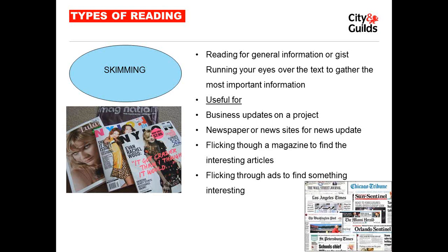The second type is skimming — reading for general information or gist, running your eyes over the text to gather the most important information. In real life it's useful for reading business updates on a project to get a general idea of what happened, reading newspapers or news sites just to get a sense of what's going on in the world, or flicking through a magazine to find interesting articles to read later.